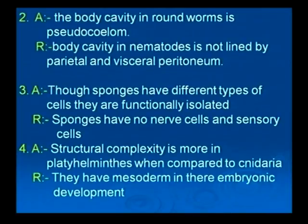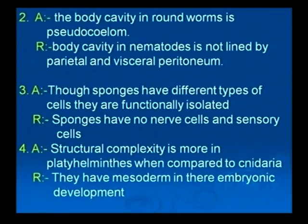The next assertion: the body cavity in roundworms is pseudo-coelom. Reason: the body cavity in nematodes is not lined by parietal and visceral peritoneum. The third assertion: though sponges have different types of cells, they are functionally isolated. Reason: sponges have no nerve cells and sensory cells. The fourth assertion: structural complexity is more in platyhelminthes compared to cnidaria. Reason: they have mesoderm in their embryonic development.